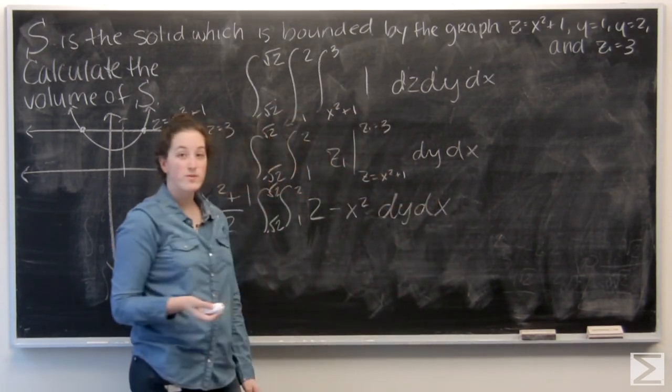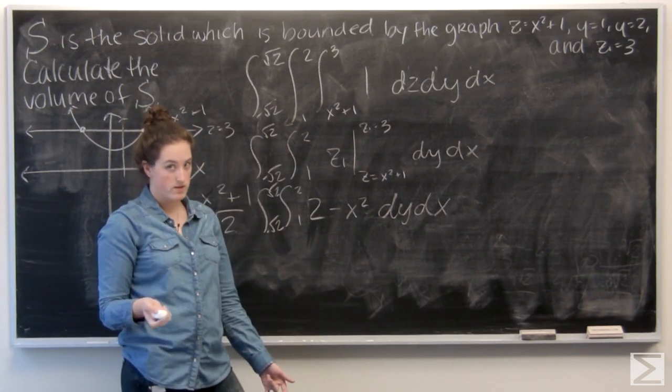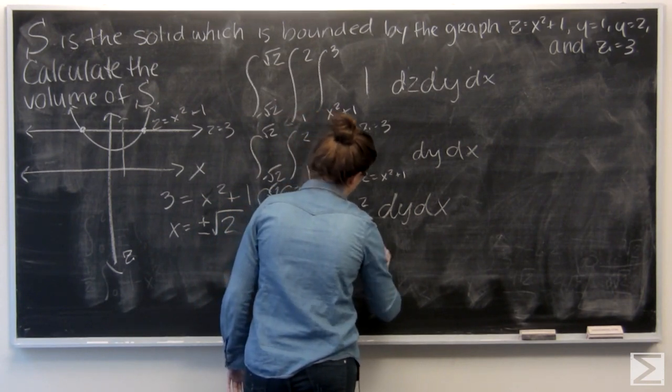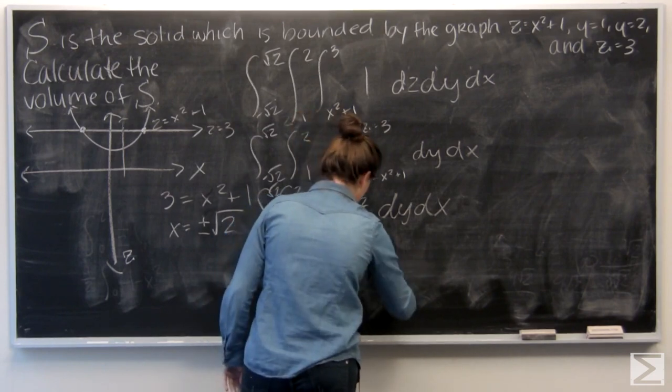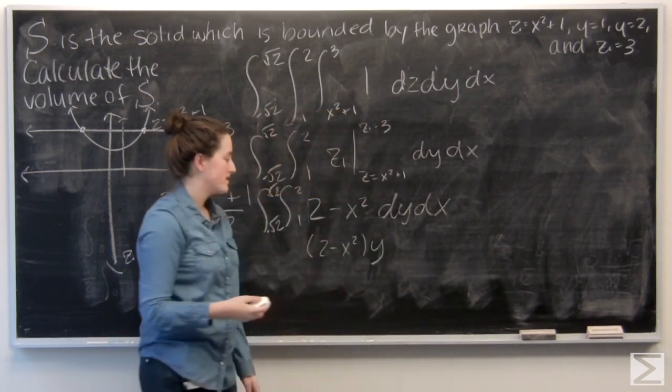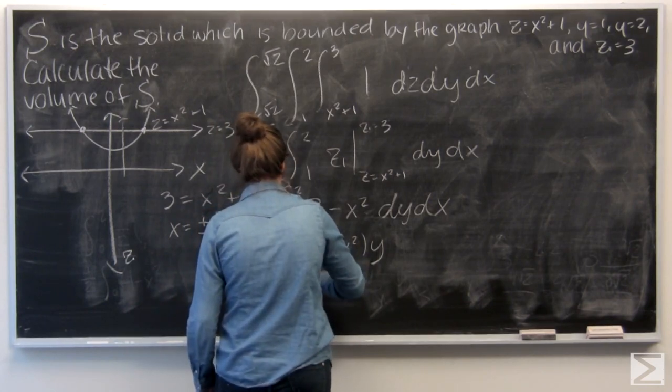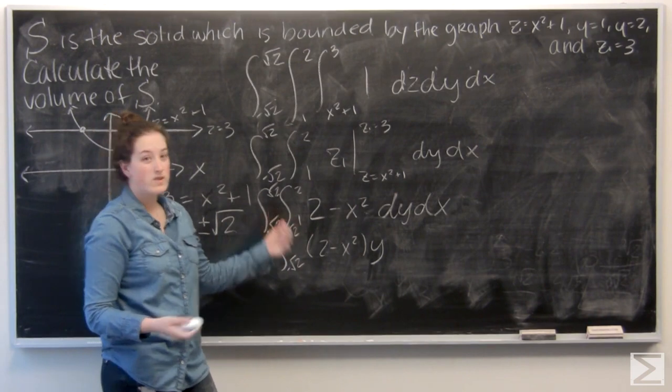So now I'm ready to integrate with respect to y. So 2 minus x squared is just a constant. So let me go ahead. 2 minus x squared times y. And I'm ready to evaluate from y equals 1 to y equals 2.